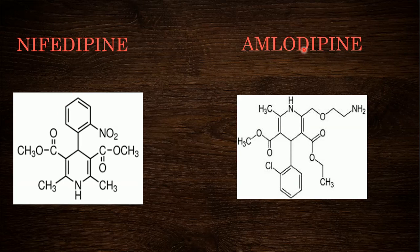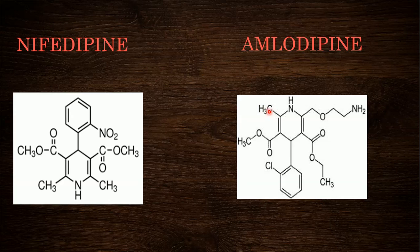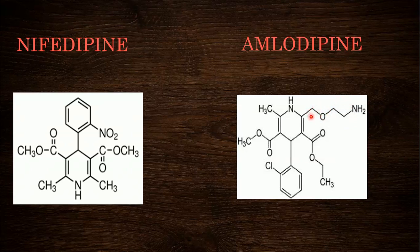Amlodipine is the second structure, also containing 1,4-dihydropyridine. At the second position a methyl group is present, at the third position there is a methyl ester, and at the fifth position there is an ethyl ester. At the sixth position there is a side chain consisting of an ethylamino group and methoxy group forming one alkyl side chain. At the fourth position a chlorobenzene is attached.